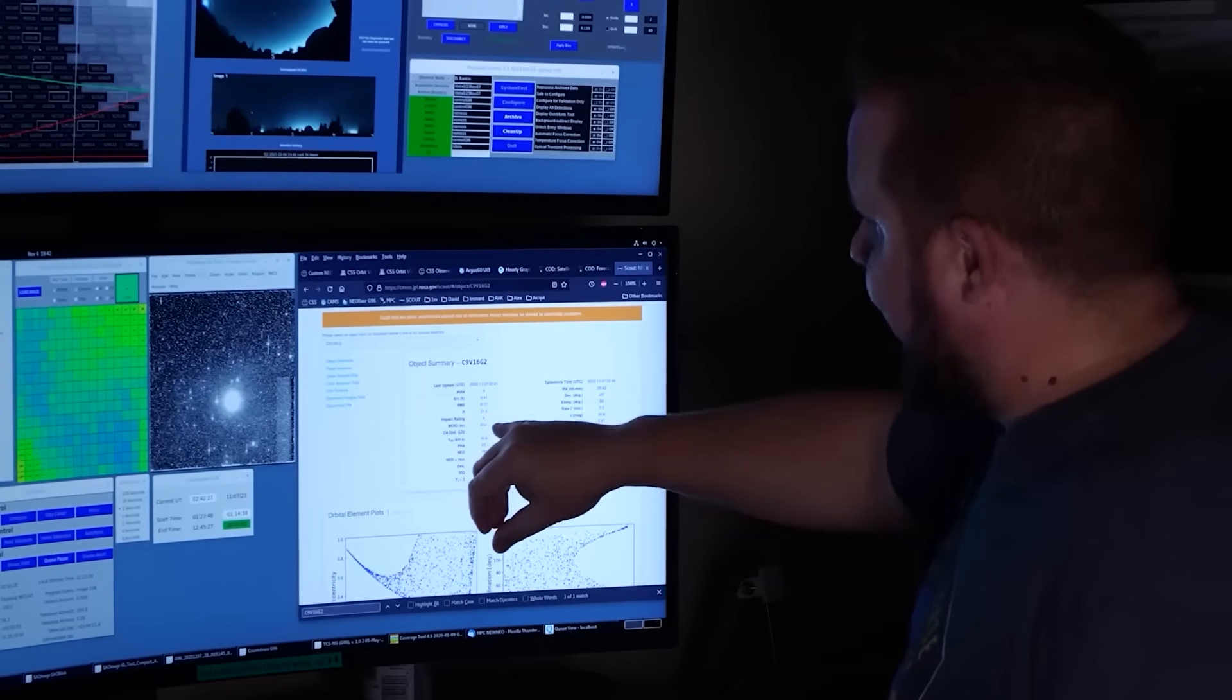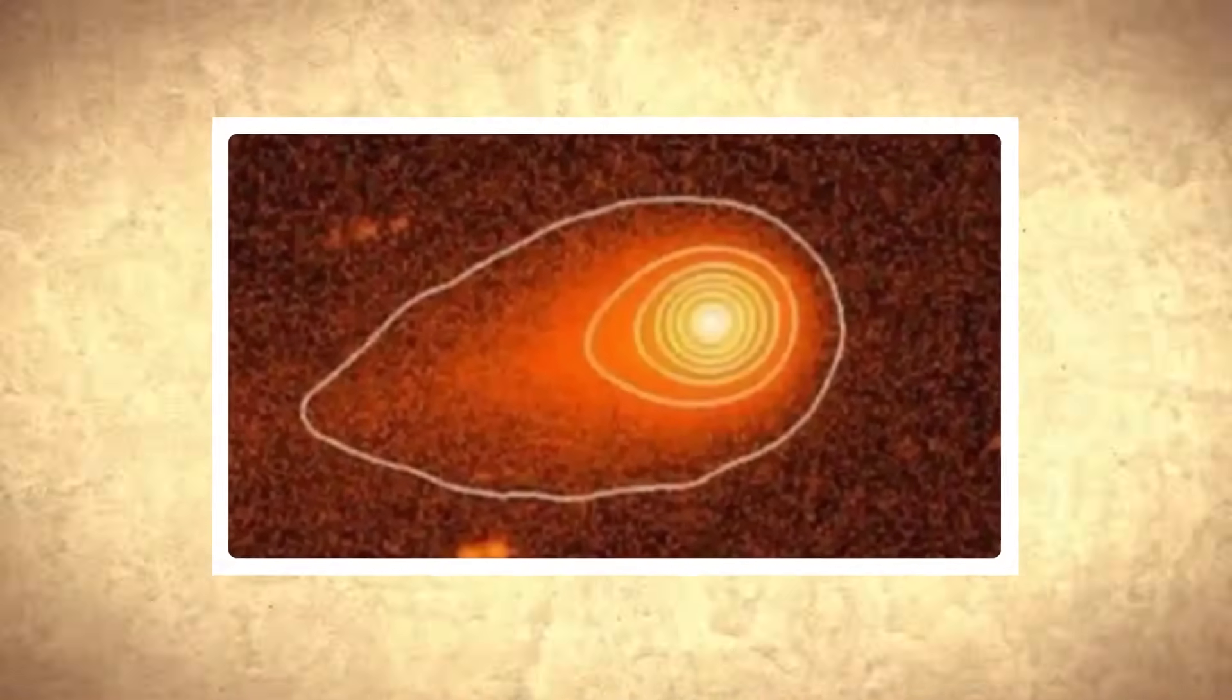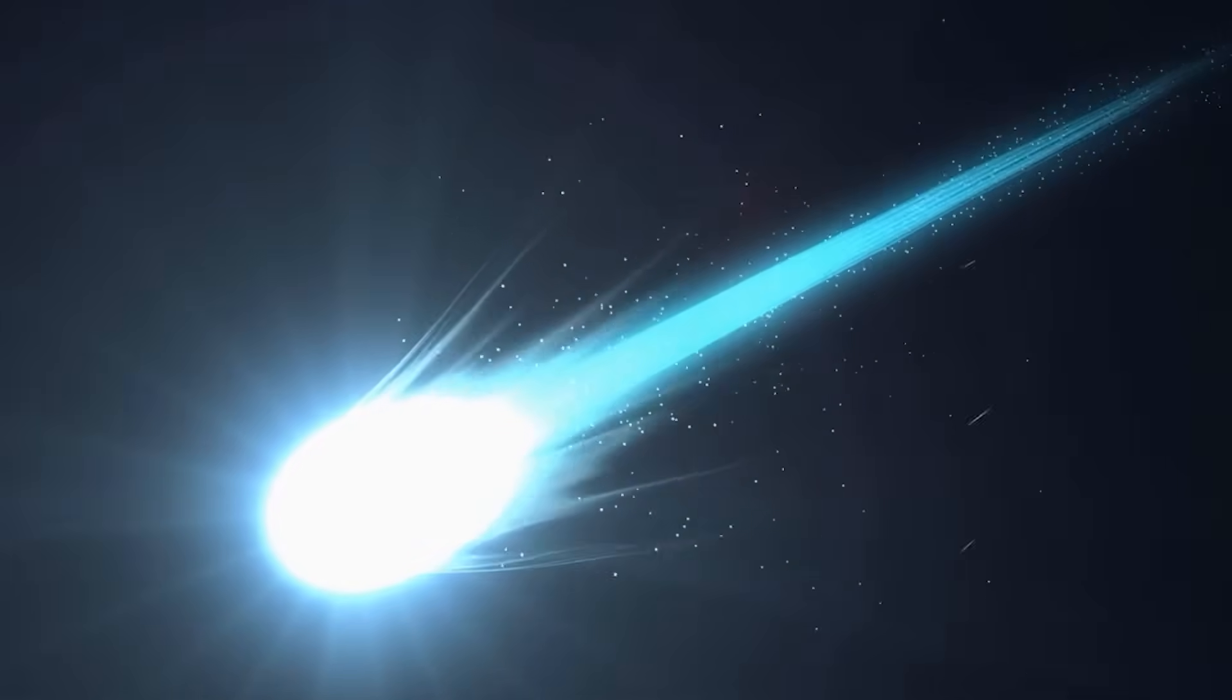And there is something else we don't fully understand yet. Something much easier to notice, but not as easy to explain. Why is 3I Atlas so blue?